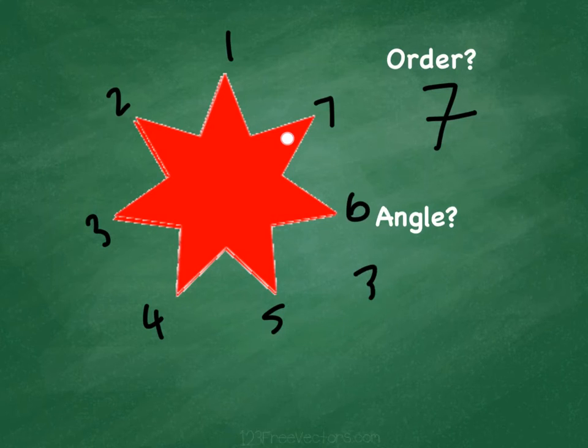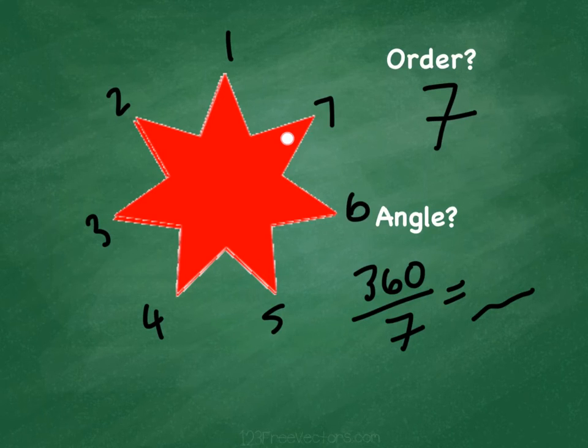And then what you do is you take 360 and divide it by 7. And that gets you your angle. Now in this case, it's not a very nice number, but usually it is. 360 divided by 7 is like 51.43. But usually it's a nicer number. 7 doesn't divide into 360 very nicely. But that's angle and order.